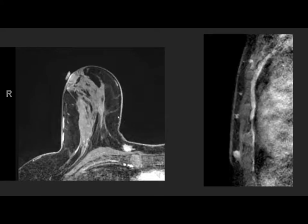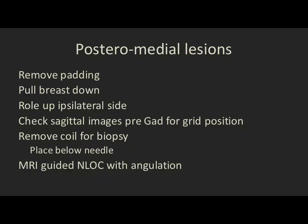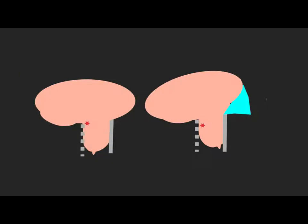Challenge number six: the extreme medial lesion, which if anything is a little bit more tricky than the extreme posterolateral lesion. Luckily, we can see this one by ultrasound — I don't think we could ever biopsy it otherwise. What we do is very similar to the extreme posterolateral one: we remove the padding, pull the breast down, and this time we roll up the ipsilateral side. Check those sagittal images pre-gadolinium for grid position. You may need to remove the coil to do the biopsy and place it below the needle. An MR-guided needle localization with angulation may be required. Wedging up the ipsilateral side and pulling the breast tissue down can bring it within the grid.